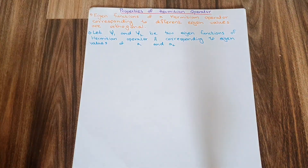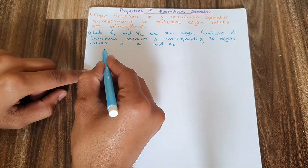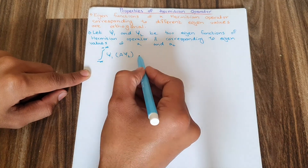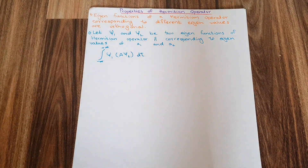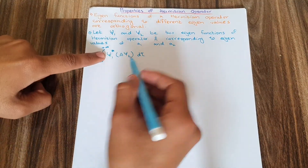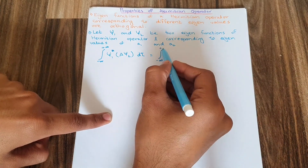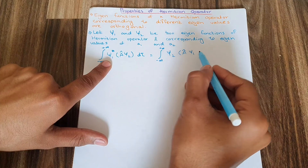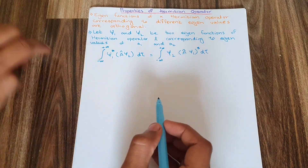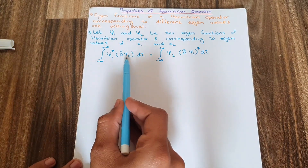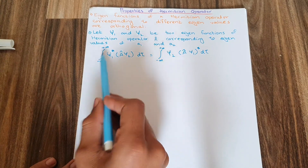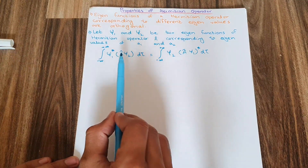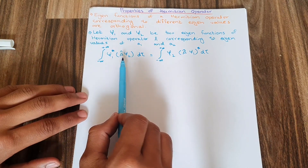You need to know the condition for the Hermitian operator. The condition says that the integral from minus infinity to positive infinity of ψ₁* times (A ψ₂) dτ should be equal to the integral of ψ₂ times (A ψ₁)* dτ. This is the condition for the Hermitian operator that must be fulfilled.